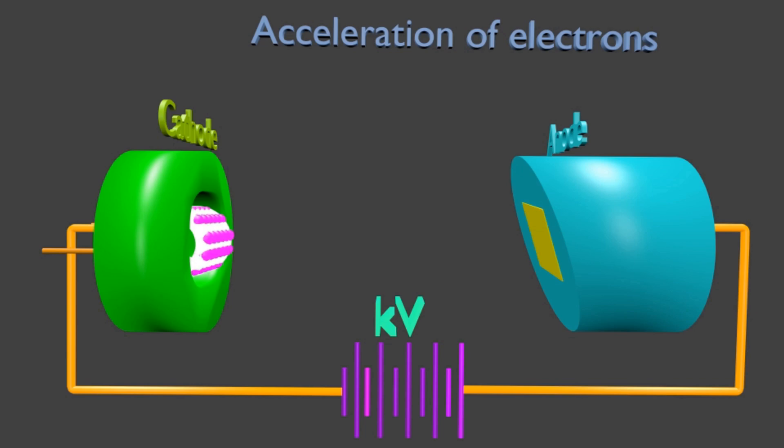In the last video, we saw how electrons are produced and accelerated to bombard with target on anode side. X-rays are produced from target by characteristic and Bremsstrahlung processes.